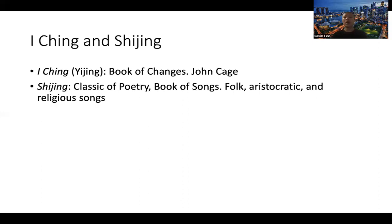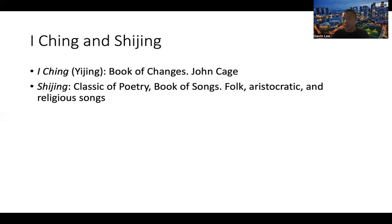The I Ching and Shi Jing are described as works of music in Chinese music history. They are actually collections of song lyrics. The I Ching was made famous by John Cage, also known as the Book of Changes — a book used for divination in which the explanations for abstract characters included verses that were actually song lyrics. The Shi Jing is known as the classic of poetry or book of songs, and it comprised folk, aristocratic, and religious songs.